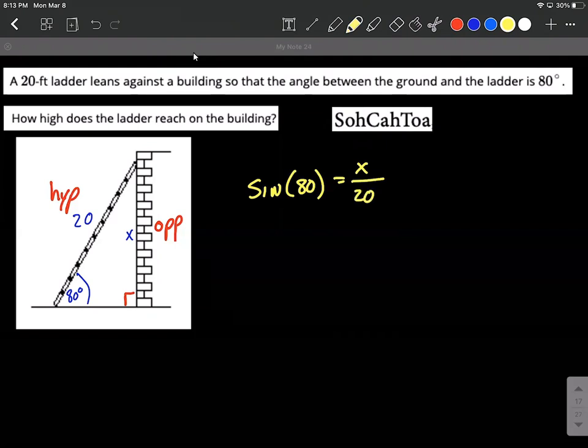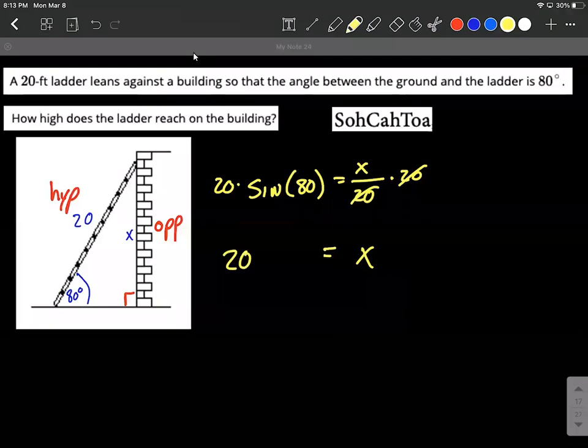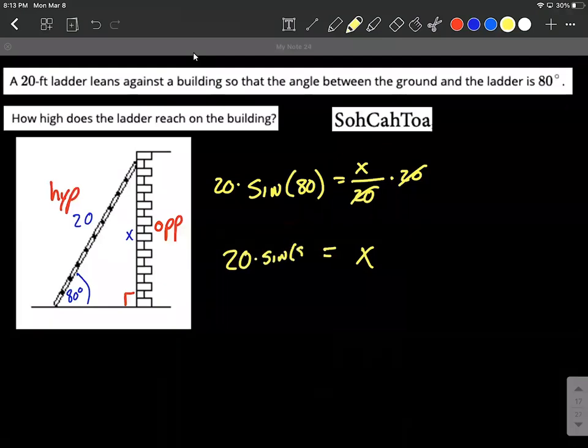So we need to solve this equation for x. Shouldn't be too bad—we'll move the 20 to the other side by multiplying both sides by 20. So here we have x is going to be 20 times sine of 80 degrees. And that's an exact answer as far as this height goes.